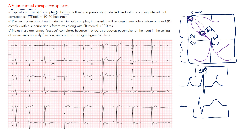The P wave is often absent or may be buried within the QRS complex. It's absent because we're starting at the AV node. But it may be buried because you can have anterograde conduction going down to the ventricles and also retrograde conduction going back up toward the atria, causing retrograde activation of the atria that distorts the QRS complex or ST segment.